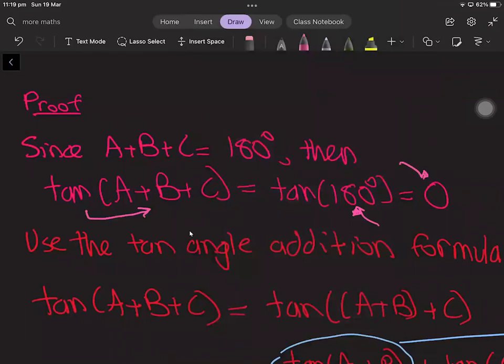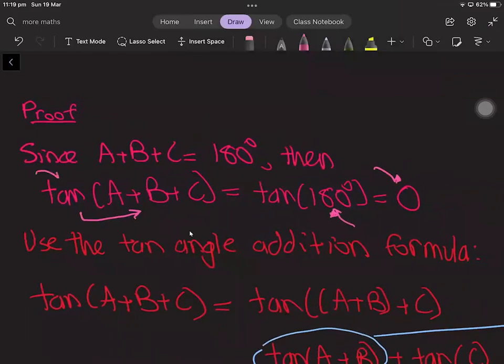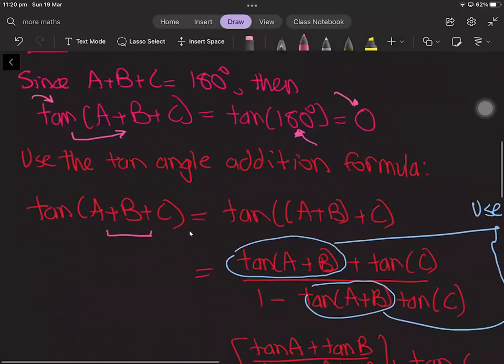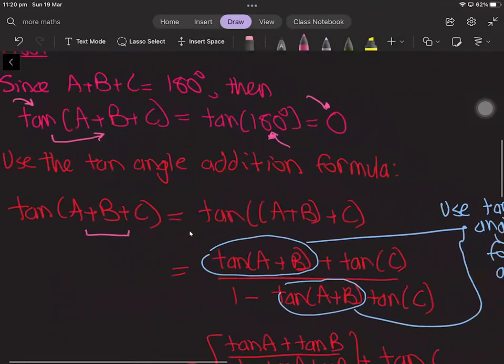But now we can also find tan(A + B + C) in a second way, which is using the tan angle addition formula. So what we can do is, since we are adding three terms, we can split these up into A + B and C.